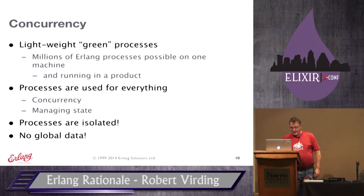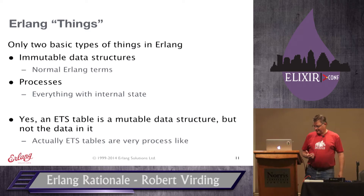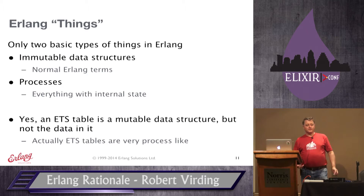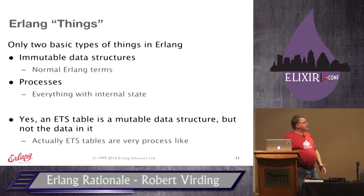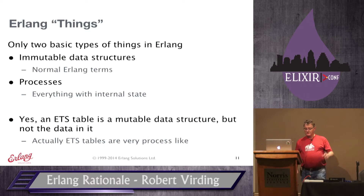Processes are isolated — you can crash them without affecting anything else. There is no global data in the system. One of the first principles: there are only two basic types of things in Erlang — immutable data structures and processes. If you look at the system, those are the only two different types of things you have. The ETS table, for example, is an immutable data structure — all data put in it is standard immutable Erlang data. I can add new things to the table but cannot modify existing data.